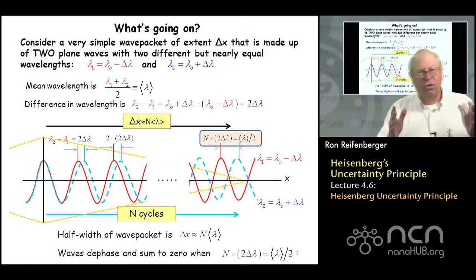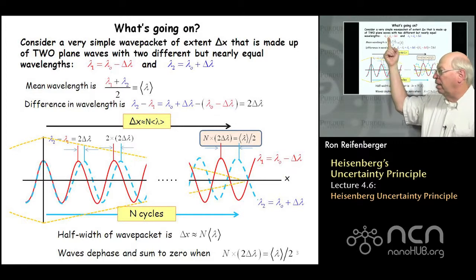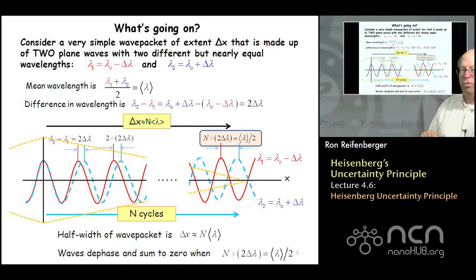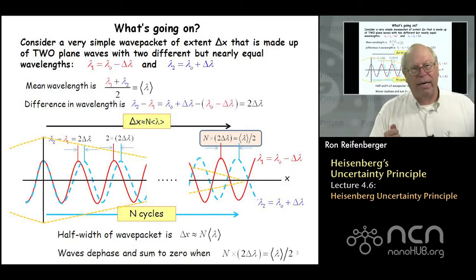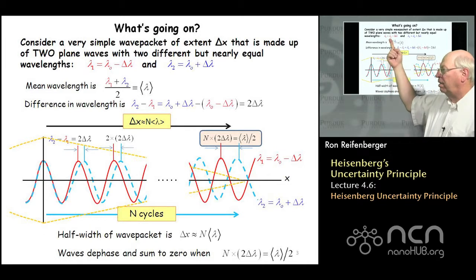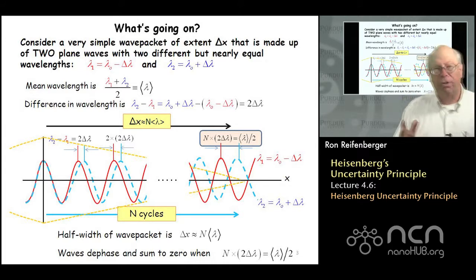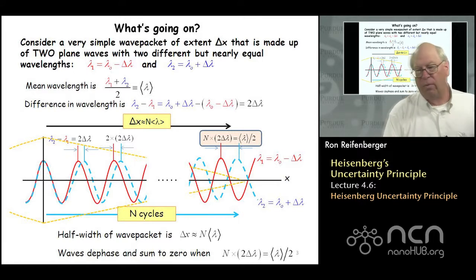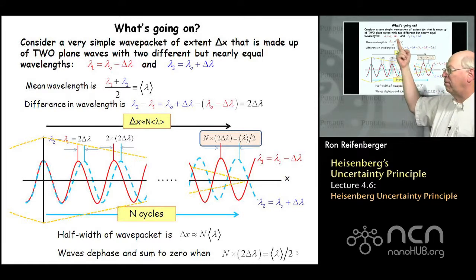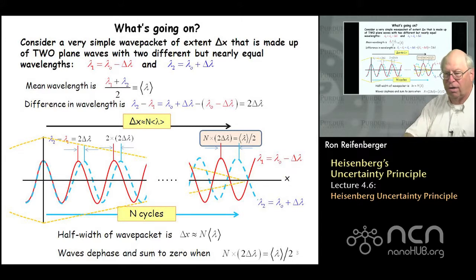I want you to think about two waves. One is a red wave with wavelength lambda sub 1, and the other is a blue wave with wavelength lambda sub 2. Lambda 1 is going to be lambda 0 minus some quantity delta lambda, and lambda 2 is lambda 0 plus delta lambda, so the blue wave has a slightly longer wavelength than the red wave.